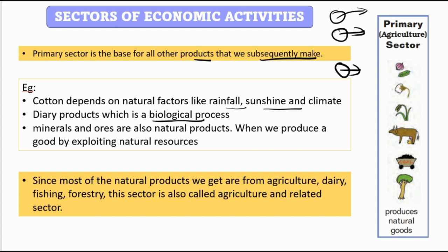Cotton depends on natural factors like rainfall, sunshine, and climate. Dairy products — like milk, cheese — rely on animals; we take their milk, which is a biological process that takes place in their body. Minerals and oils are also obtained through natural processes. When we produce goods by exploiting natural resources, that is the primary sector.